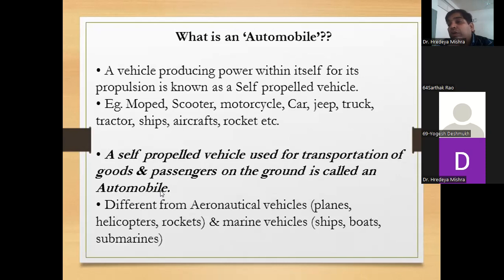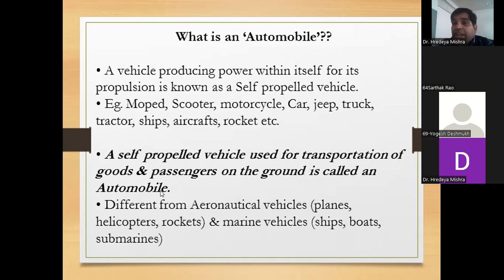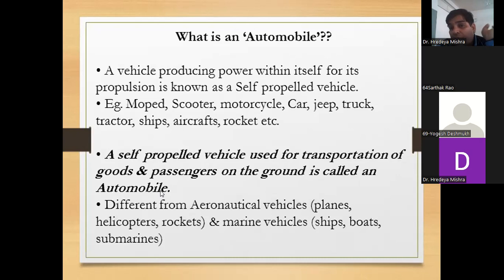An automobile is specifically a vehicle used for the transportation of goods and passengers on the ground only. We cannot say that an aircraft is an automobile. We cannot say that a submarine or waterplane is an automobile. Only the vehicle which runs on the road and is used for transportation of goods and passengers is called an automobile.